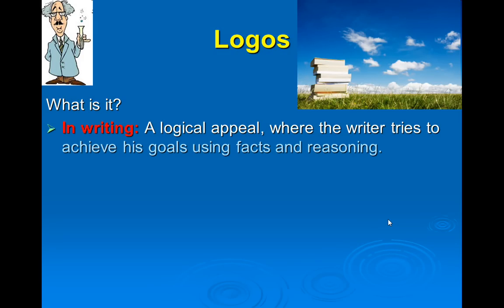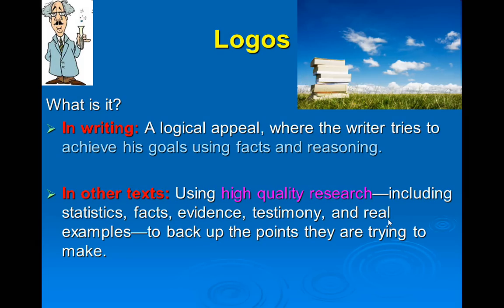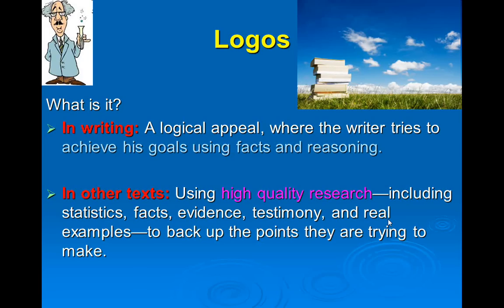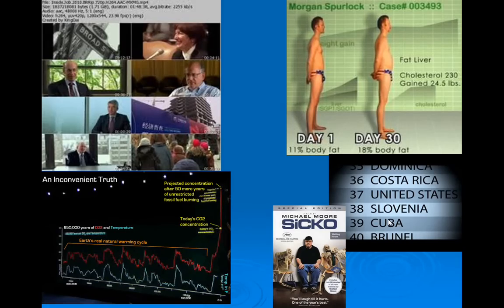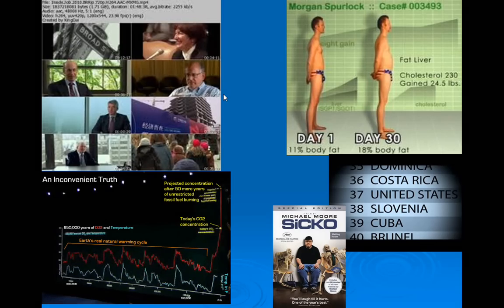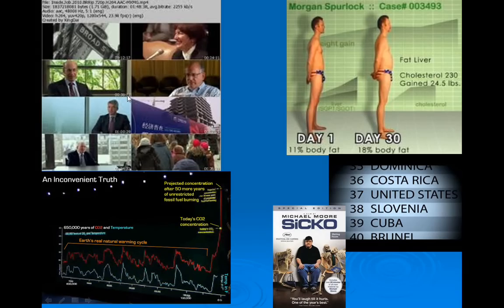Logos, in writing, is about logic, evidence, facts, and reasoning. In other texts, it's about high-quality research, and it's mostly related to documentaries or essays. Statistics, facts, evidence, testimony, and real examples — anything used to back up the points a text is making. For instance, the documentary Inside Job interviews financial experts and identifies their credentials each time, showing credible researchers so we trust the information. The facts and statements those people give is the logos, while their credibility is the ethos. Don't confuse the two.